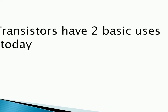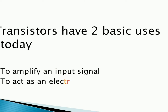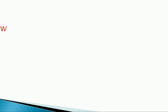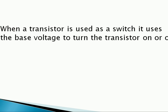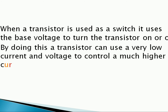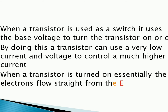The uses of transistors: it has mainly two basic uses. One is to amplify an input signal, and the second is to act as an electronic switch. When a transistor is used as a switch, it uses the base voltage to turn the transistor on or off. By doing this, a transistor can use a very low current and voltage to control a much higher current. When a transistor is turned on, the electrons flow straight from the emitter to the collector.